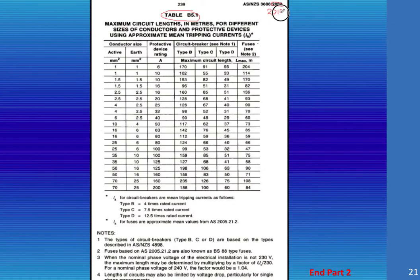We have our active and earths or our conductor sizes, our protective device rating as I should say, and then our circuit breaker types here. And here's the note. We should take note that a B curve needs four times rated load to trip immediately, 7.5 for a C and 12.5 times for a D. The types of circuit breakers B, C or D are based on the types described in the Australian standard for circuit breakers.